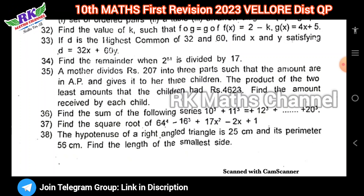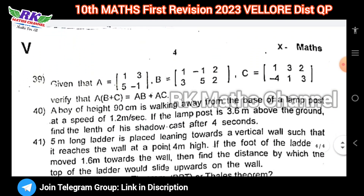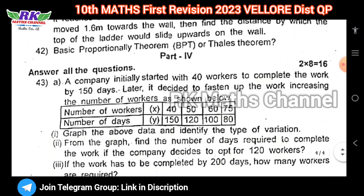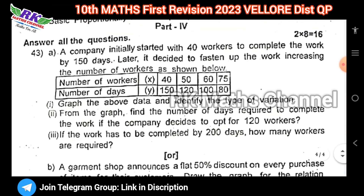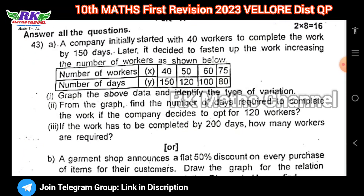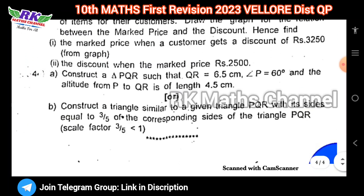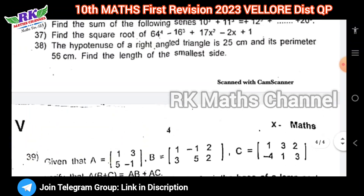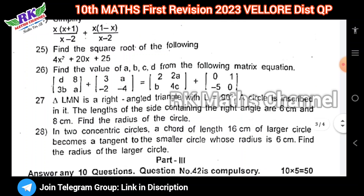Practice these important questions. Basic Proportionality is a compulsory question. For 8-mark questions: graph and geometry — graph of variation 2, and geometry — triangles and similar triangles. So this covers the first 4 units of the question paper — full syllabus, first 4 units.